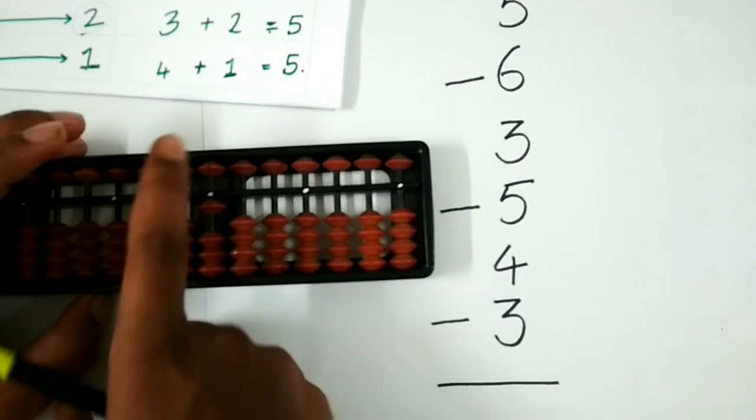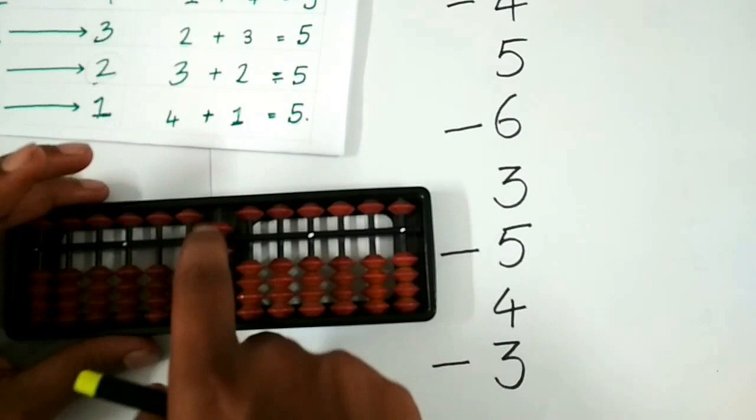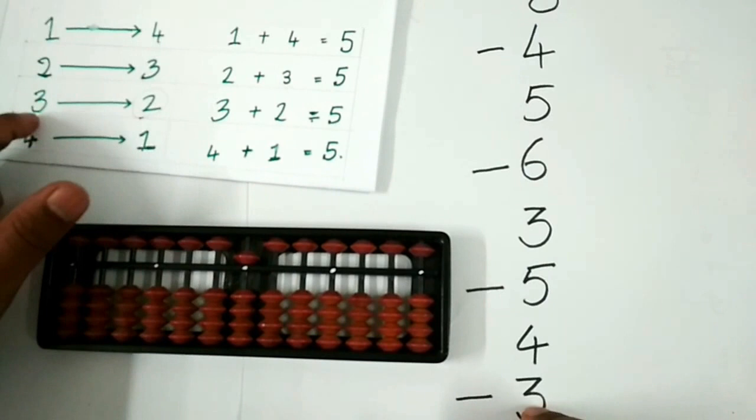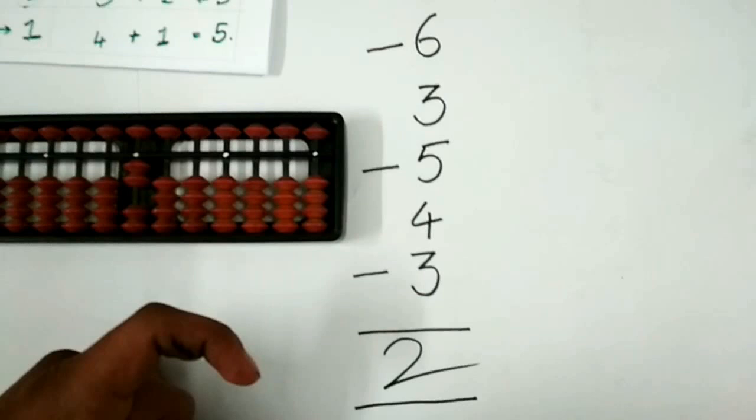To add 4, let us check who the friend of 4 is. 4's friend is 1. So add 5 and remove 4. To subtract 3, check who the friend of 3 is. Friend of 3 is 2. So remove 5 and add 2. We get the answer as 2. Let us move to the next problem.